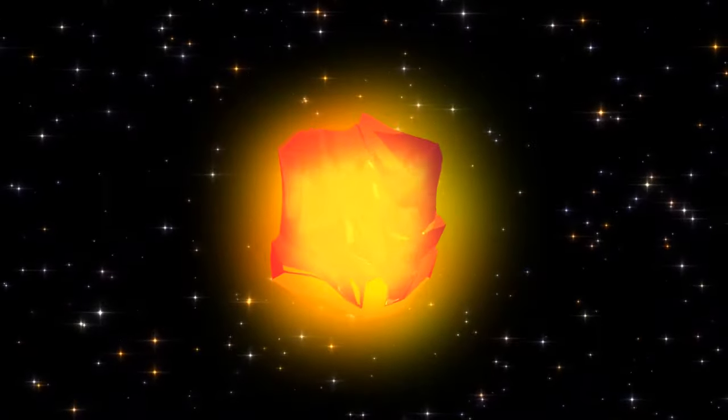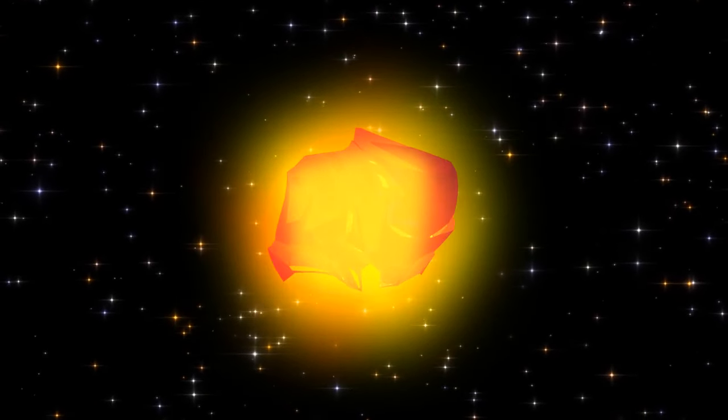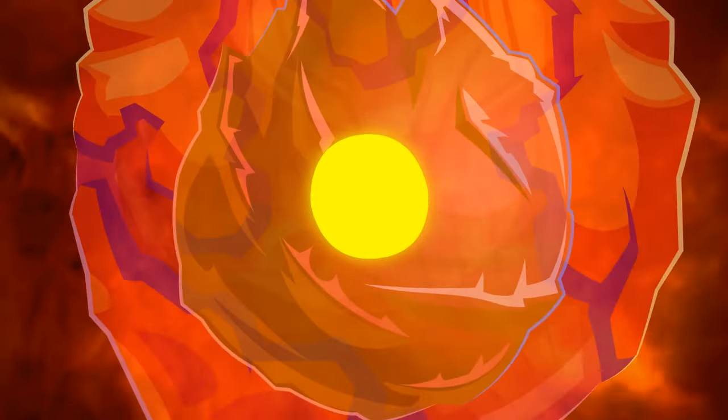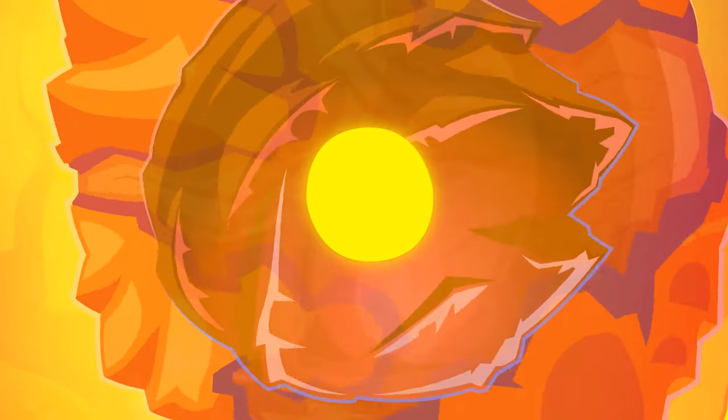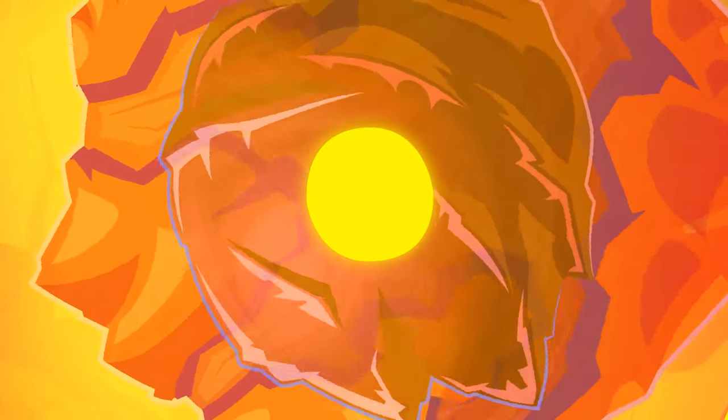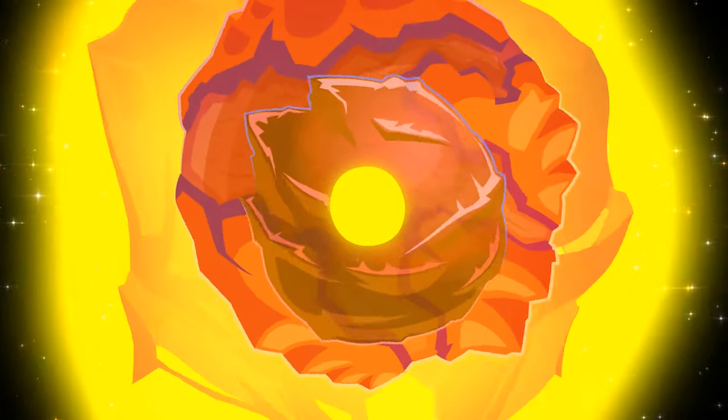At first, Betelgeuse was very massive and hot. But it didn't expand and remained stable. Let's look into its heart. The nuclear reactions in the star's core create a lot of heat and energy. This energy produces the force that pushes on the walls of the star from the inside and causes it to expand.